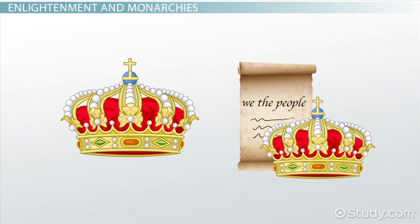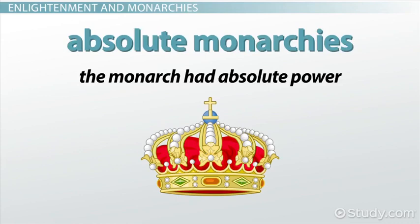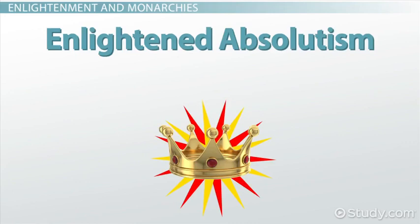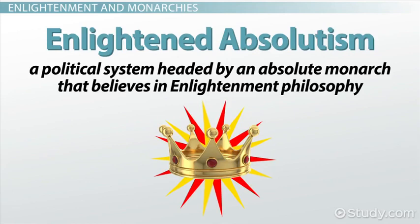On the other side of this are the actual political systems of Europe. Most European nations were absolute monarchies, meaning the monarch had absolute power. This is different than a constitutional monarchy, where the power of the monarch is restricted by the constitution.